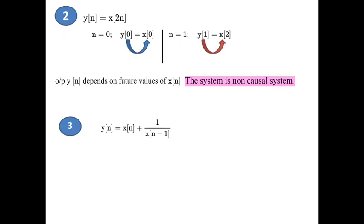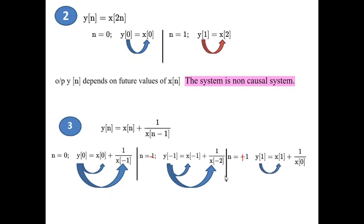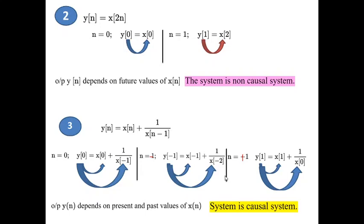Third problem: y[n] = x[n+1] / x[n−1]. For n = 0: output depends on present and past values. For n = +1: y(1) = x(2) / x(0), so output depends on present and past values. For n = −1: output depends on present and past values. In all 3 cases, the output is not dependent on future values. Hence, the system is said to be a causal system.